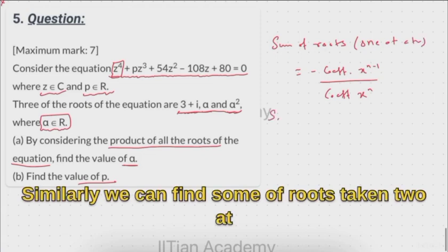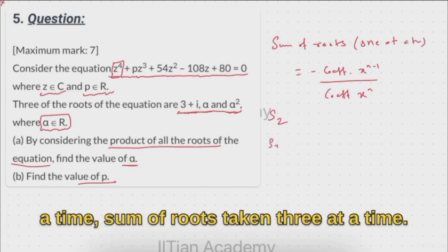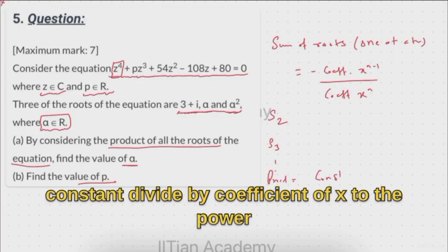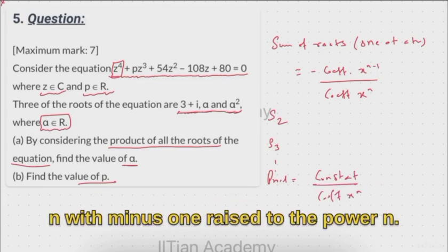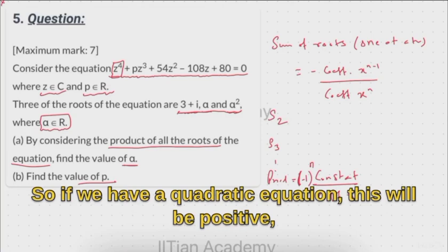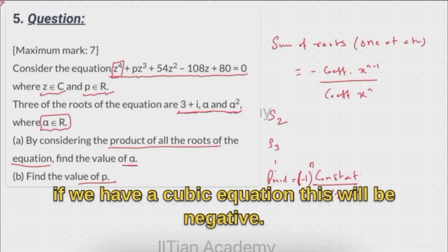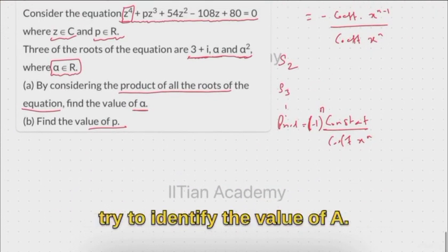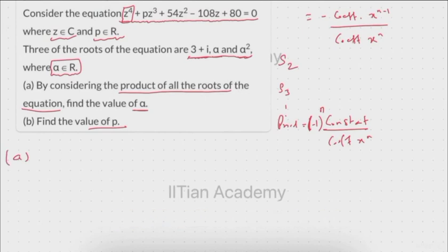Similarly we can find the sum of roots taken two at a time, sum of roots taken three at a time, and at last the product of roots, which is the constant divided by the coefficient of x raised to n, multiplied by minus one raised to power n. So if we have a quadratic equation this will be positive, and if we have a cubic equation this will be negative. Using this theory of equations, let us identify the value of a.